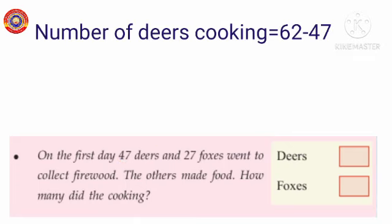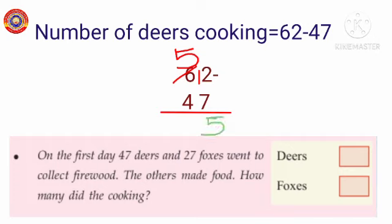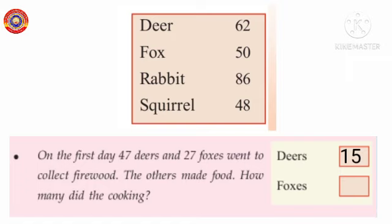Number of dears cooking equals 62 minus 47. Here in the ones place, 2 and 7 are there. We can't subtract 7 from 2, so you take 1 from 6. 6 becomes 5, 2 becomes 12. 12 minus 7 equals 5. 5 minus 4 equals 1. 62 minus 47 equals 15.